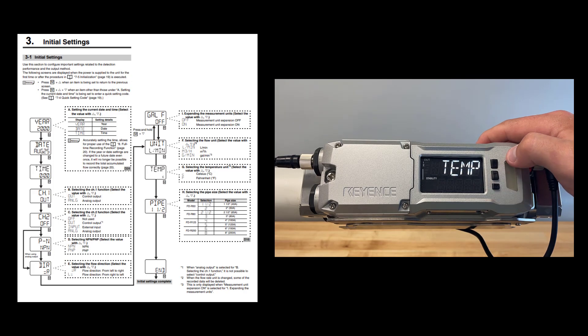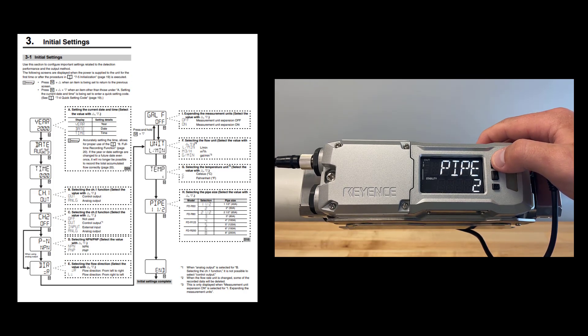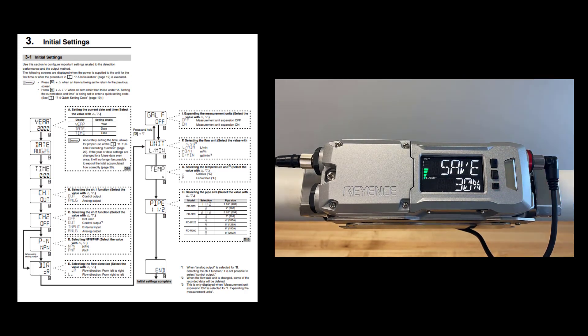You will also need to select the temperature units as either being C for Celsius, or F for Fahrenheit. Finally, select the pipe size applicable to the FDR and the application. Tap mode twice to confirm and save all of those initial settings.